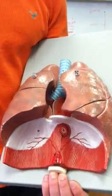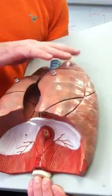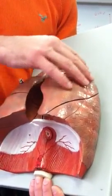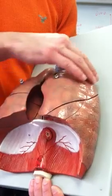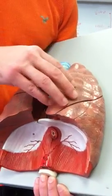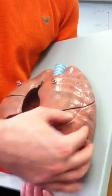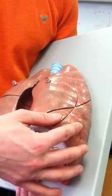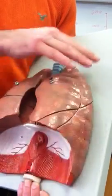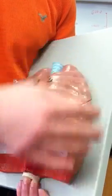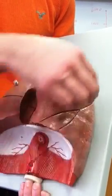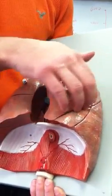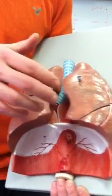Each lung is divided into lobes. Our left lung is divided into only two lobes: the superior lobe up here, and the inferior lobe, which is sort of posterior and below the superior lobe. The superior lobe and inferior lobe of the left lung are separated by the oblique fissure, this line that we see here.